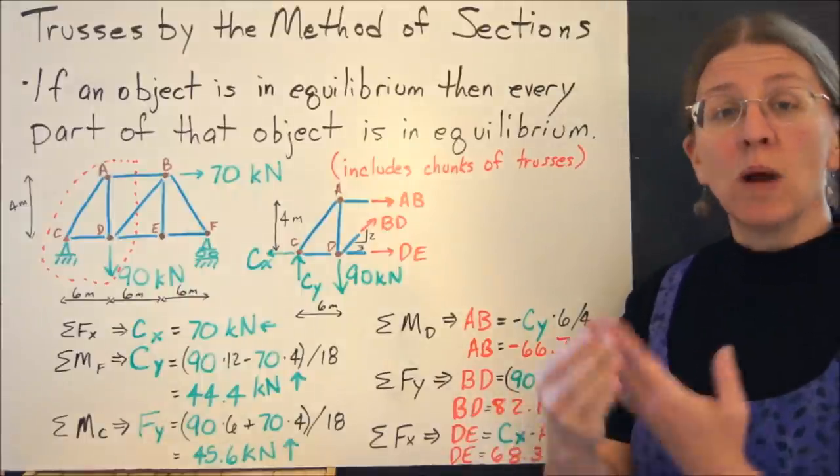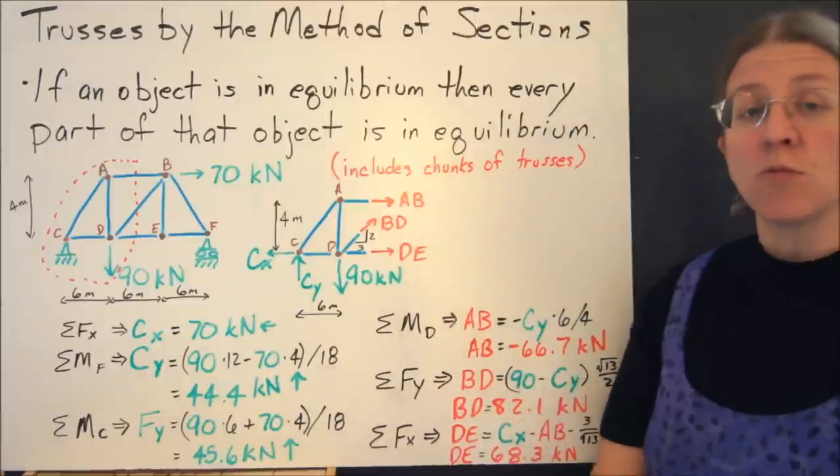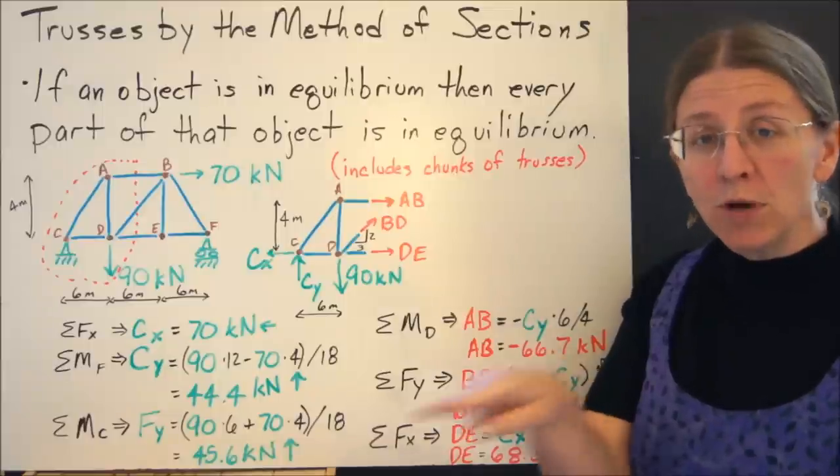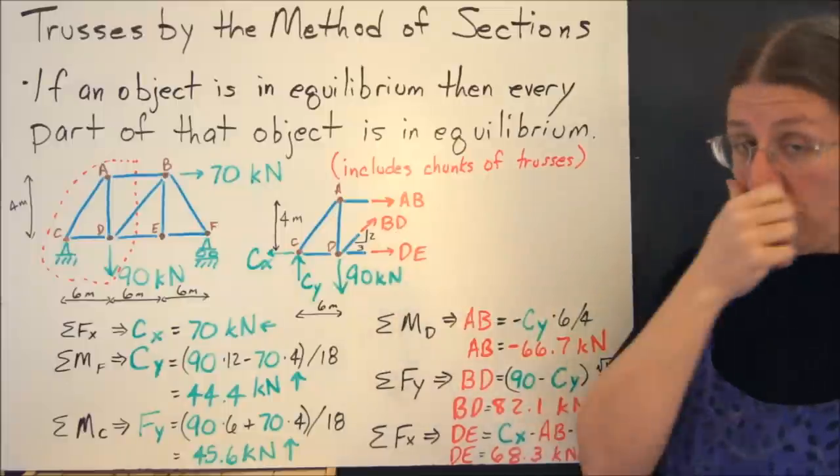Or when I consider what's happening inside a two-force member, I just get these three forces that act along the member itself. So if this is a four and a six, then this is a two and a three.